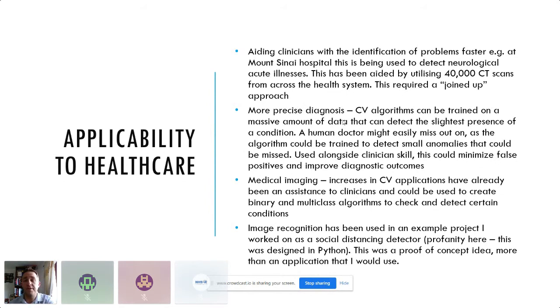We need that for more different scan types, and there needs to be the ability to have these algorithms that can be trained on larger data sets. More precise diagnoses. Computer vision algorithms can be trained on massive amounts of data to detect the slightest presence of a condition. Sometimes human doctors might miss these out. I term these as clinical decision-making aids. They're not there to replace clinical decision makers. In medical imaging, there's been increases in CV applications. DeepMind and Google were looking at working with Moorfields Eye Hospital around ophthalmology. There's a lot of novel applications around binary and multi-class algorithms.